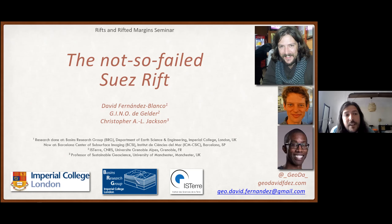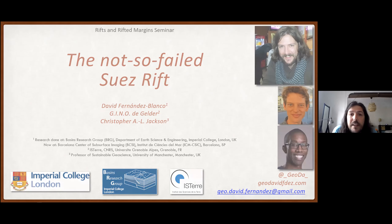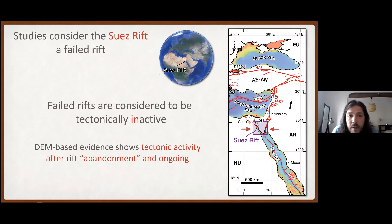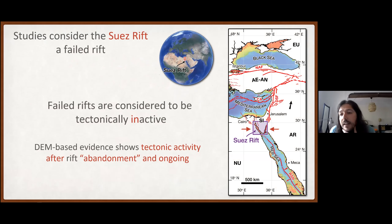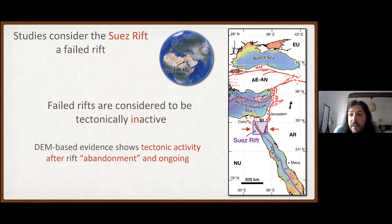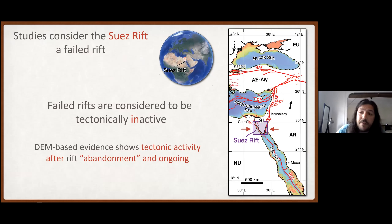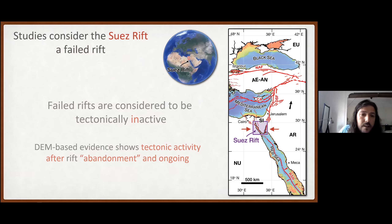I guess my title already gives away my main result, so I'm going to start by the end. This is the Suez Rift. It's normally considered a failed rift, and failed rifts are generally considered as tectonically inactive. But with evidence from digital elevation models, we see tectonic activity after the rift is abandoned, and actually ongoing till present.